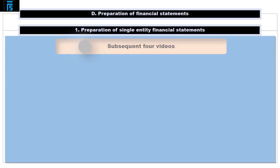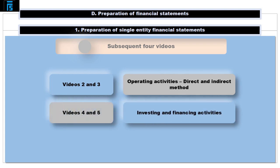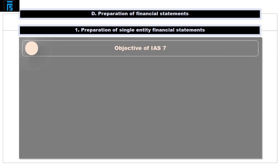In the subsequent four videos of this section, we will be focusing on — in videos two and three — cash flows from operating activities as computed under the direct and indirect approaches, and in videos four and five, cash flows from investing and financing activities, respectively.